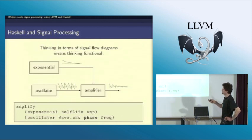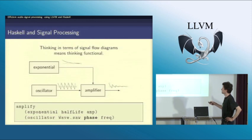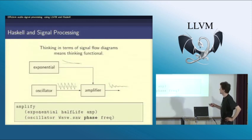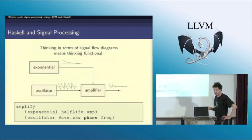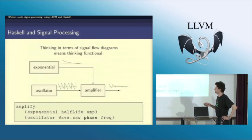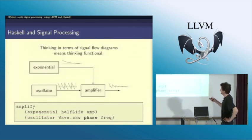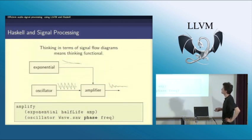I create an amplitude control, and then I control the amplitude of this tone according to this code, for instance. You can translate this literally into functional code — I have done this here. The amplifier takes these two signals as input.